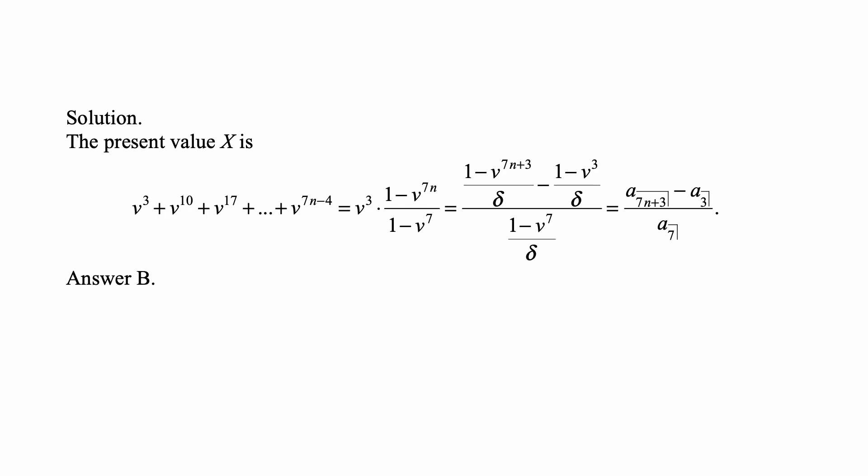And now we do a bit of a trick here, and we write this as v to the 3rd kind of restored to its position times 1, minus v to the 3rd times v to the 7n, so that's v to the 7n plus 3. So we can write this as v to the 3rd minus v to the 7n plus 3, but instead we write it as 1 minus v to the 7n plus 3, minus the quantity 1 minus v to the 3rd, and then each of those two separately divide by delta and divide the bottom by delta. Then that becomes a angle 7n plus 3 minus a angle 3 over a angle 7, and that's answer B.